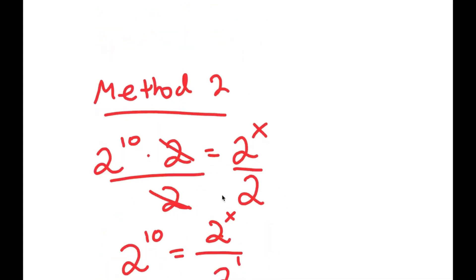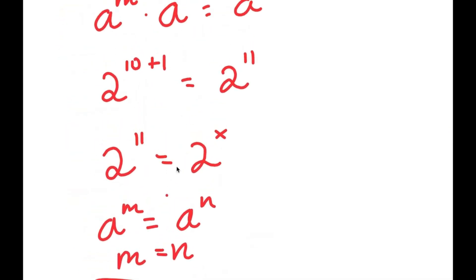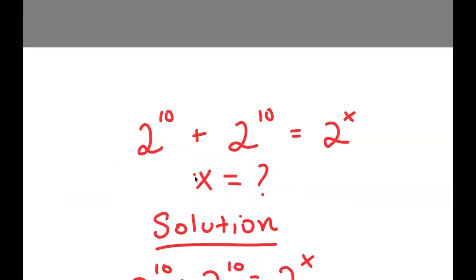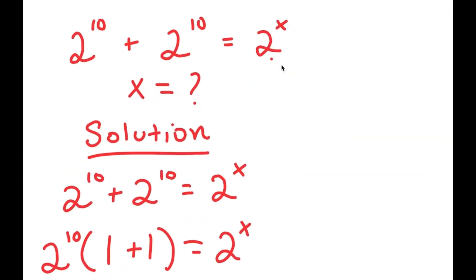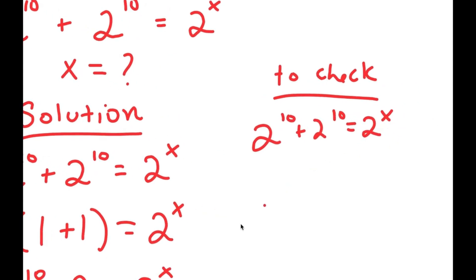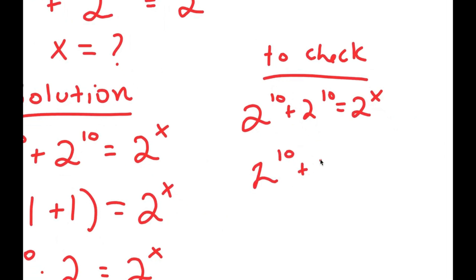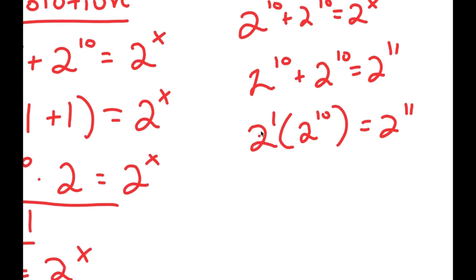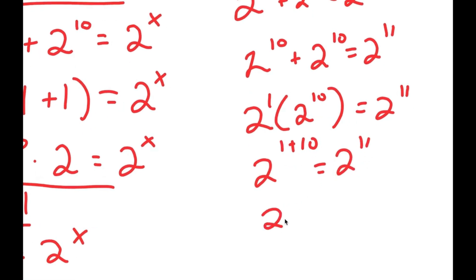As you can see, these are the two methods, and method 1 is actually much simpler — it only took a couple of steps compared to method 2. Now the final step, which we always have to do in every equation, is to check our answer. Our equation was 2^10 + 2^10 = 2^x. With x = 11: 2^10 + 2^10 equals 2 times 2^10, and 2 to the power of 1 times 2 to the power of 10 equals 2 to the power of 1 plus 10, which is 2 to the power of 11. Confirmed.